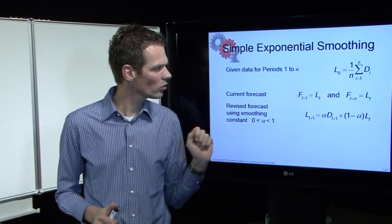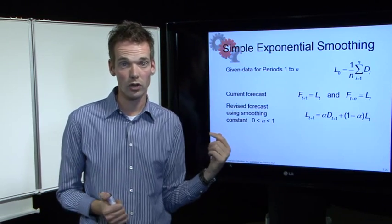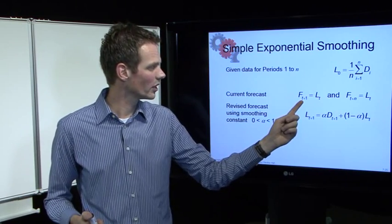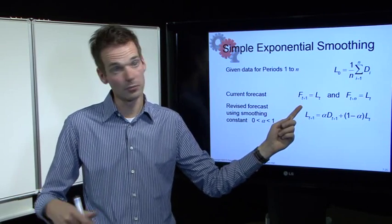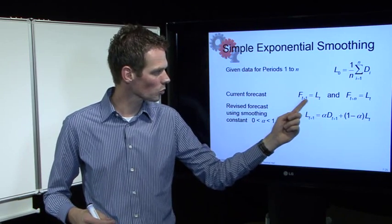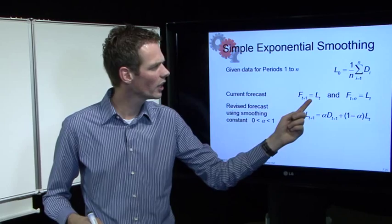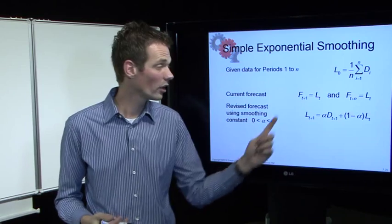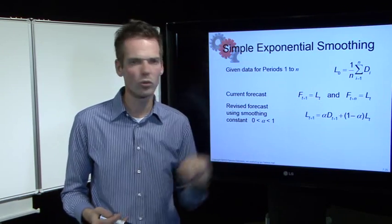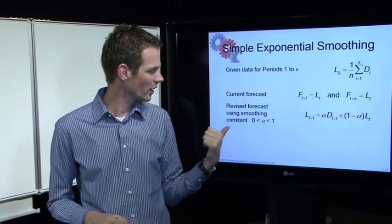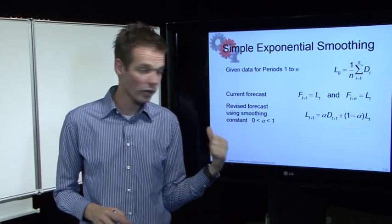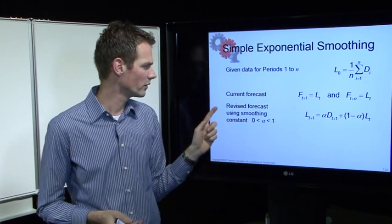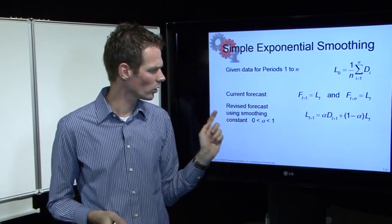Then we have to calculate the current forecast. The forecast for a given time period — for example period 4 plus 1, so forecast 5 — is simply the level for the previous period, period 4. So forecast 5 equals level 4. Those different levels are calculated through a smoothing constant.